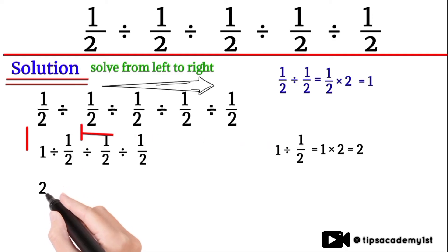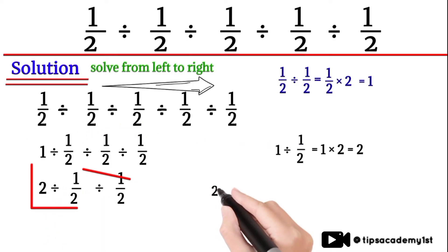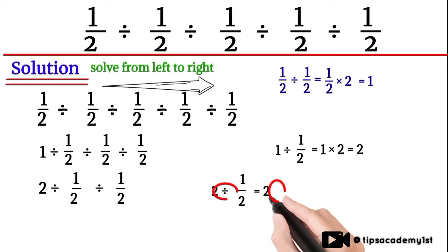Now we will take again two terms here. 2 divided by 1/2. We will change it again into multiplication and 2 multiplied by 2 will be equal to 4. So first two terms have answer 4.